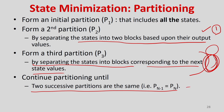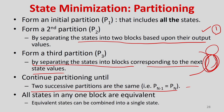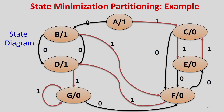All states in any one block are equivalent, and equivalent states can be combined into a single state. Let us take a state minimization example. Consider this FSM — can we further reduce it? It is clearly a Moore FSM where output is defined on states. There are 7 states with 7 transitions for input 1 (red lines) and 7 for input 0 (black lines).